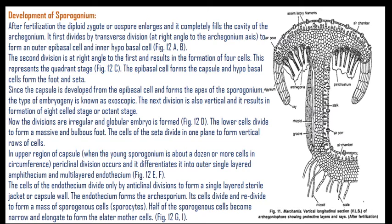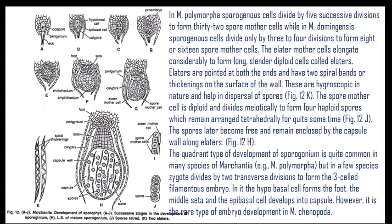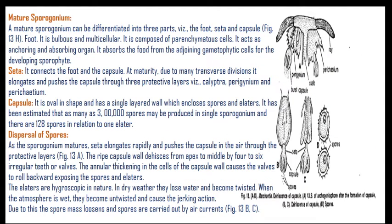The next division is vertical, resulting in an eight-cell stage. Divisions become irregular and a globular embryo is formed. The lower cells divide to form a massive bulbous foot. This gives rise to the foot, seta, and capsule structure of the sporangium. These are successive stages of sporophytic development: sporogonium, mature sporogonium, and spore tetrads. Two elaters are also developed. In this way a mature sporangium is formed.